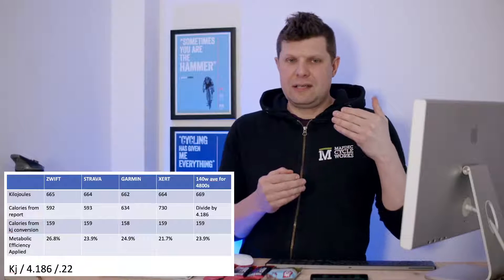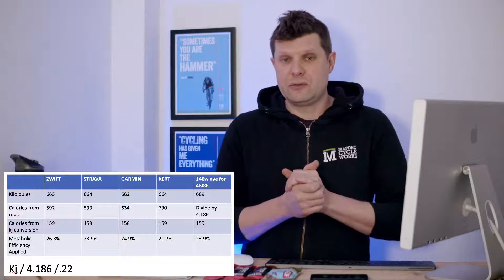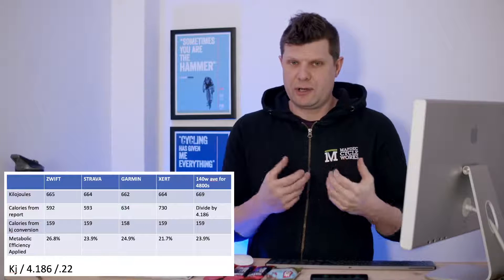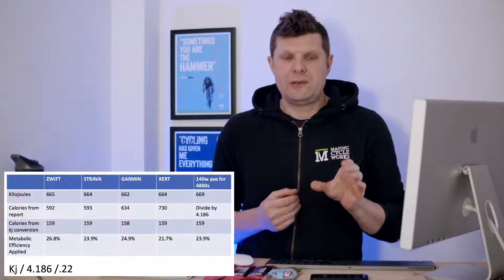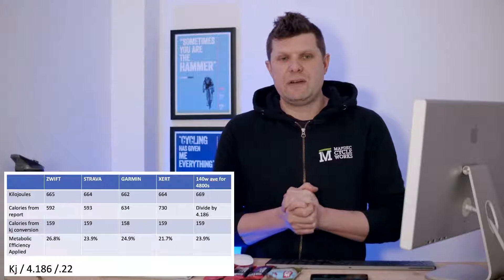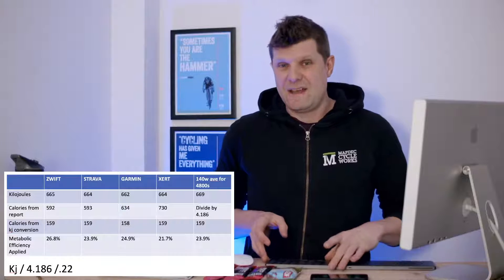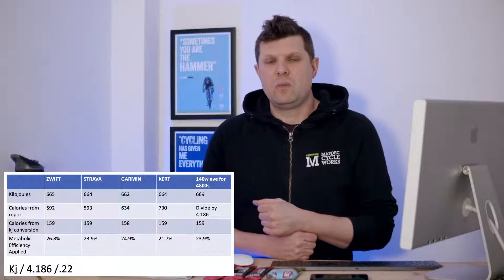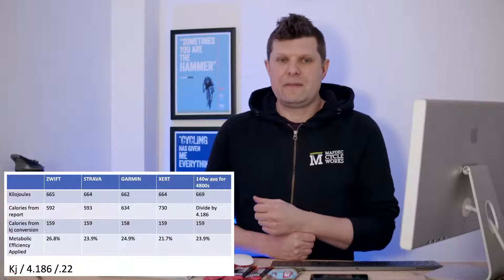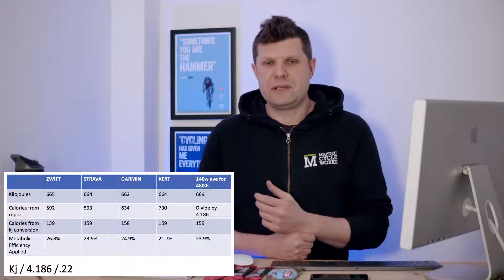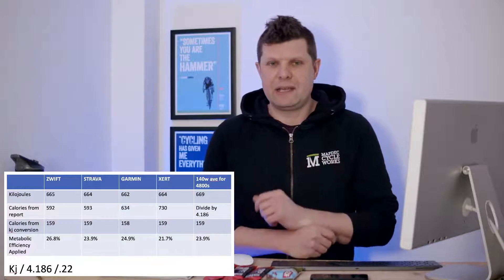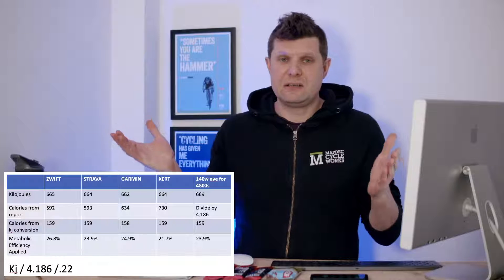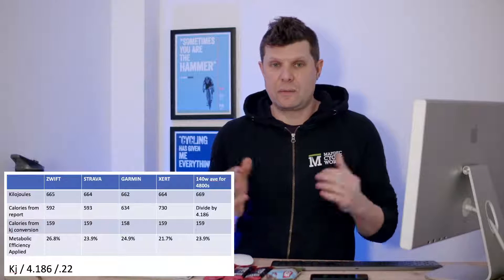After that I've taken each platform's calorie report, converted it back into kilojoules by dividing by 4.186, and looked at the implied metabolic efficiency percentages. You'll see Zwift is being very generous — they're saying about 26% efficient, which is a very very fit person. Xert on the other side gives about 21%. Garmin gives about 24–25%, Strava 23%. They're all using their own averages. Stages use 22% because it's halfway between 18 and 26, which is the estimated range for gross metabolic efficiency.